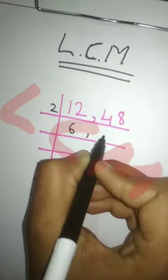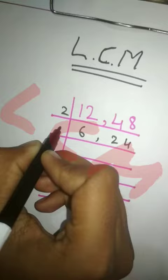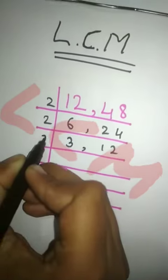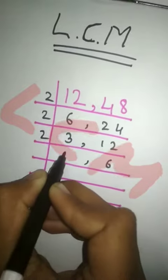2 into 12 is 6, 2 into 48 is 24. 2 into 6 is 3, 2 into 24 is 12. Next 2 into 12 is 6, and 3 as it is. 2 into 6 is 3, and 3 as it is.